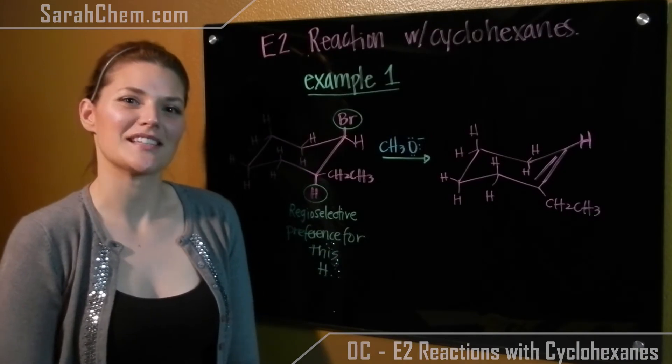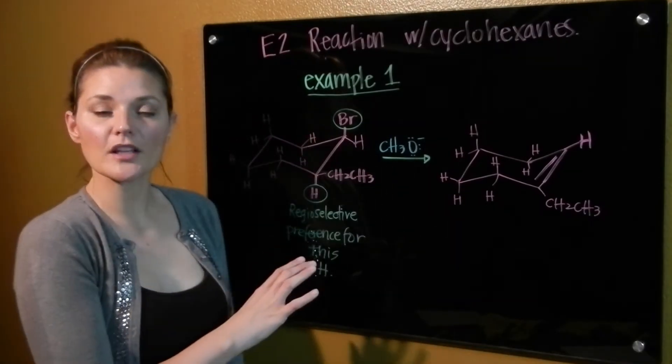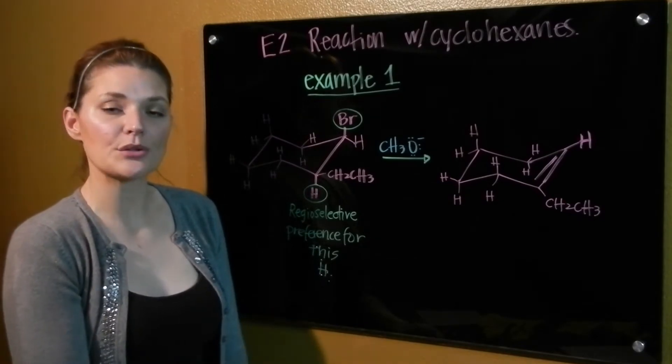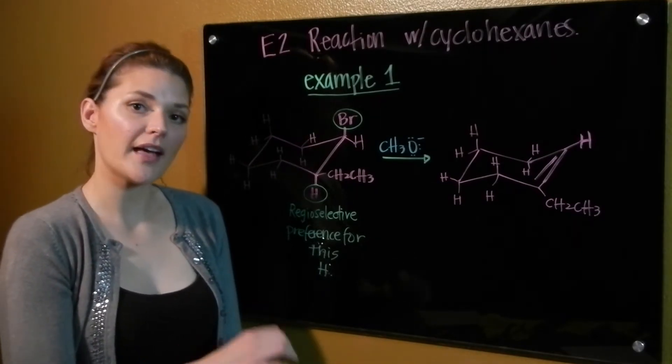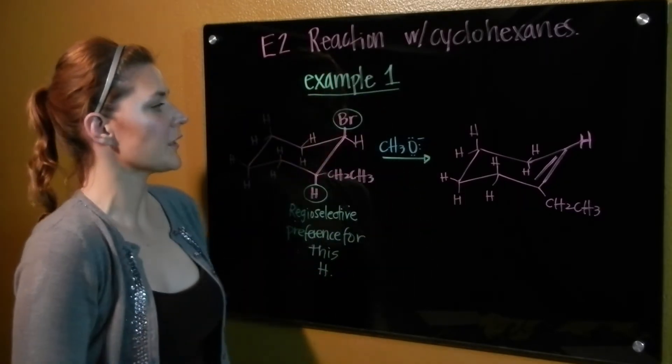Okay, let's take a look at our first example. So over here we have a cyclohexane. The first thing we need to do when talking about an E2 reaction is verify that the halogen is axially located. So over here our bromine is located in that axial position.